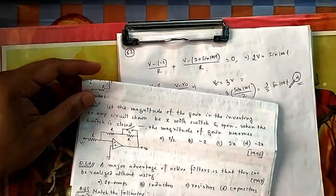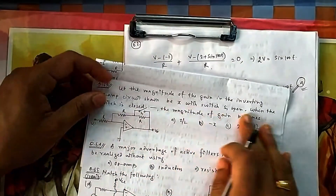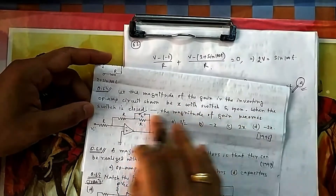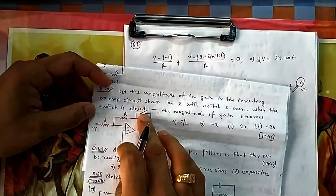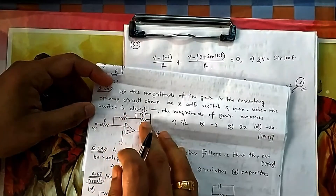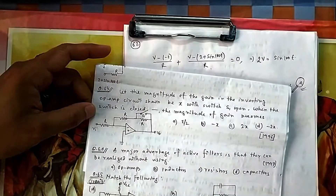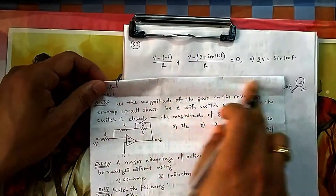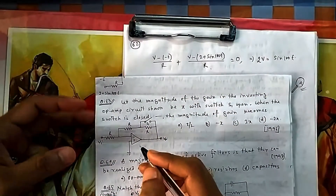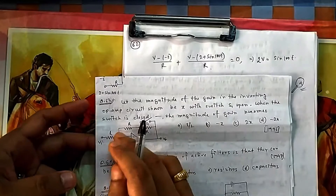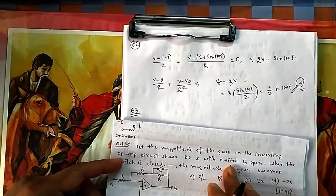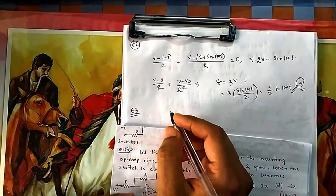In question 63, the magnitude of gain of an inverting op-amp amplifier circuit is X when switch S1 is open. When the switch is closed, there is only one R in the feedback path; when open, there is 2R. I always prefer simple nodal analysis over memorizing formulas.